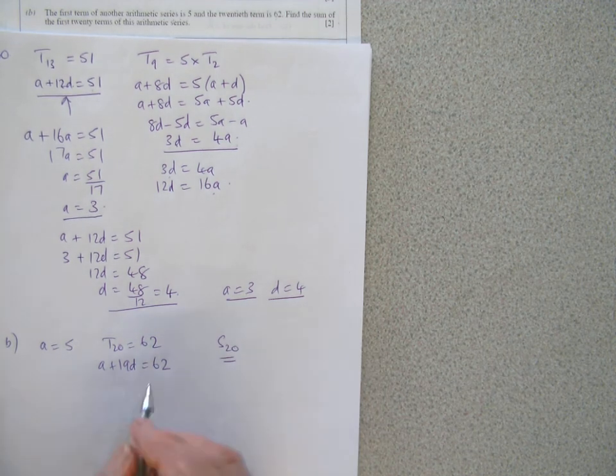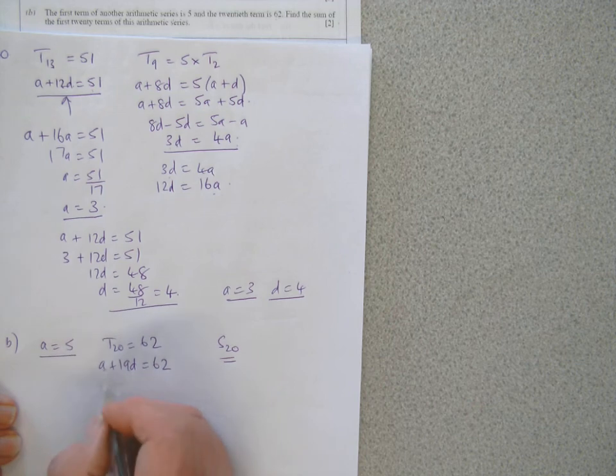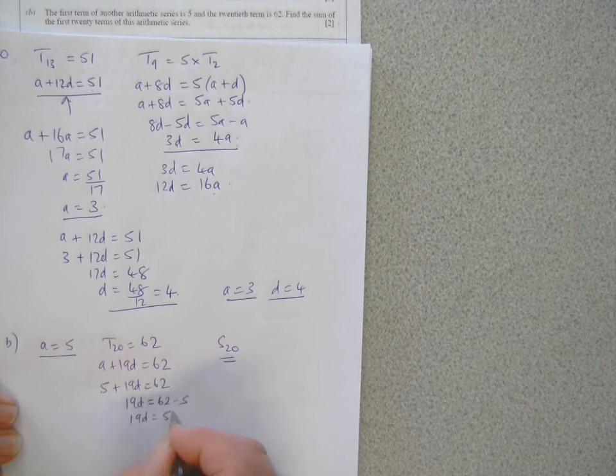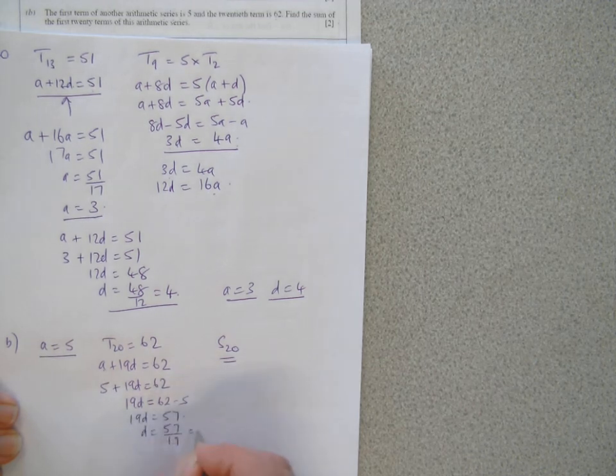Let's get D from these two equations then. Sub in for A is 5 here, 5 plus 19D is 62, so 19D is 62 minus 5, 57. So D is 57 shared by 19, which is 3.